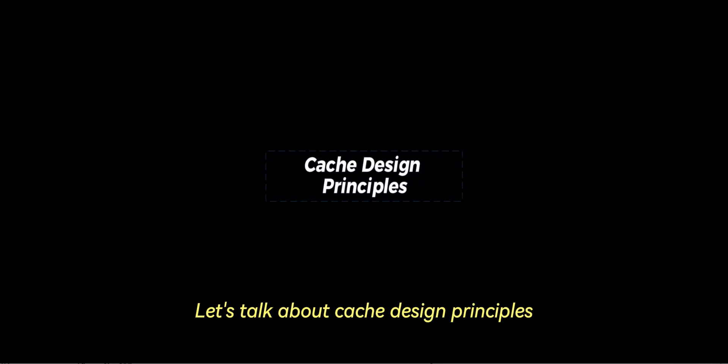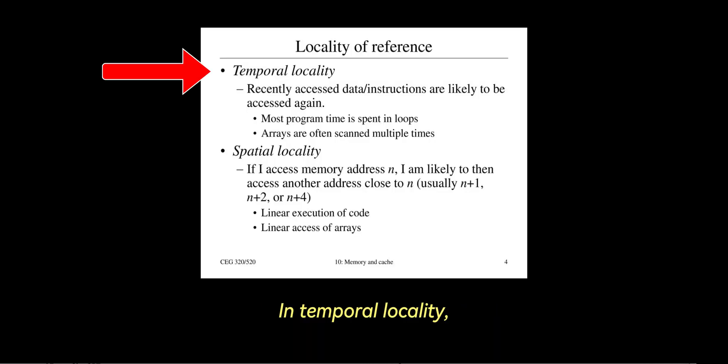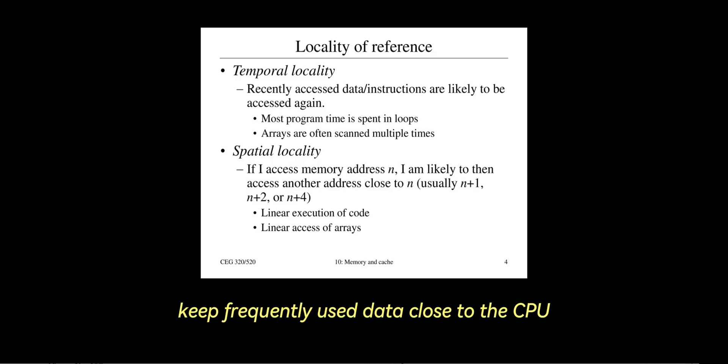Let's talk about cache design principles. The design of caches revolves around exploiting two key types of locality. In temporal locality, if a piece of data is accessed once, it's likely to be accessed again soon. Caches keep frequently used data close to the CPU to leverage this property.